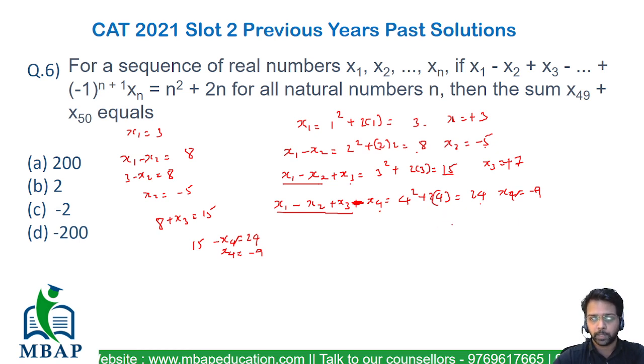Let's see the difference of any of these two values. Let me first plot x1, x2, x3 and x4 in a very simple way. Let's put this as plus 3 minus 5 plus 7 minus 9.